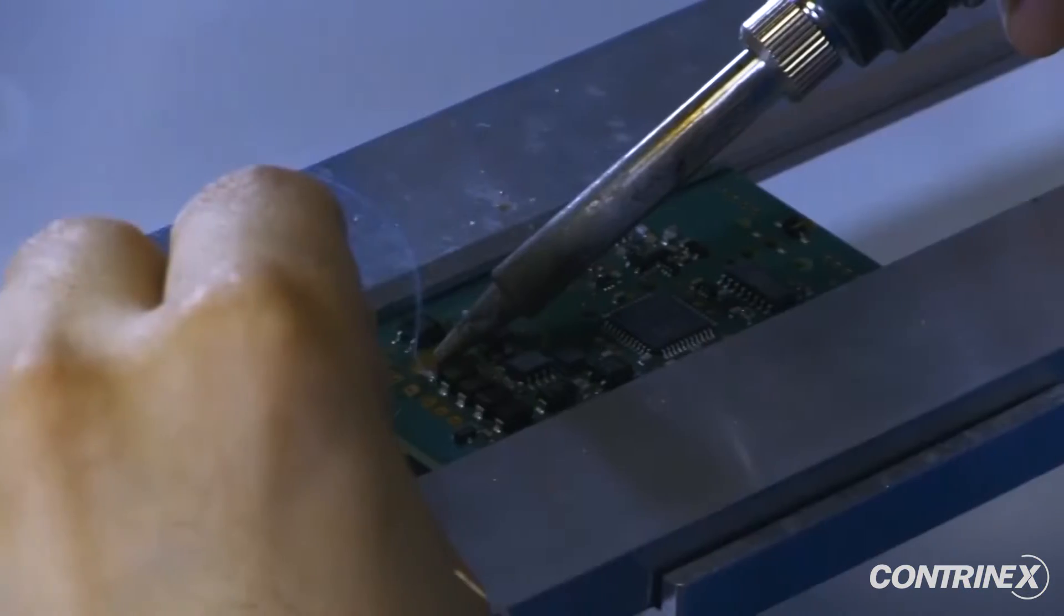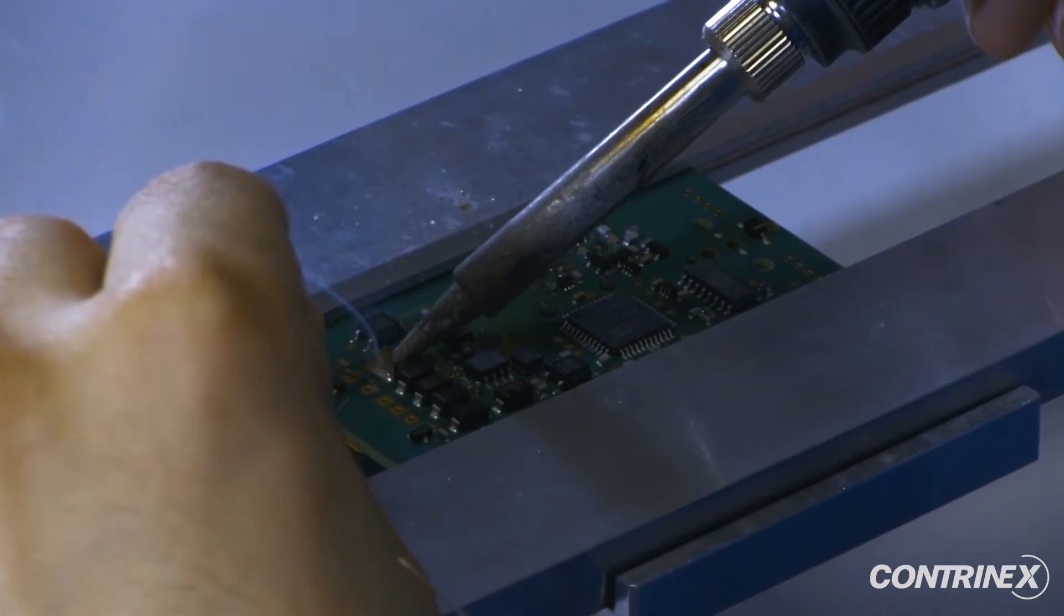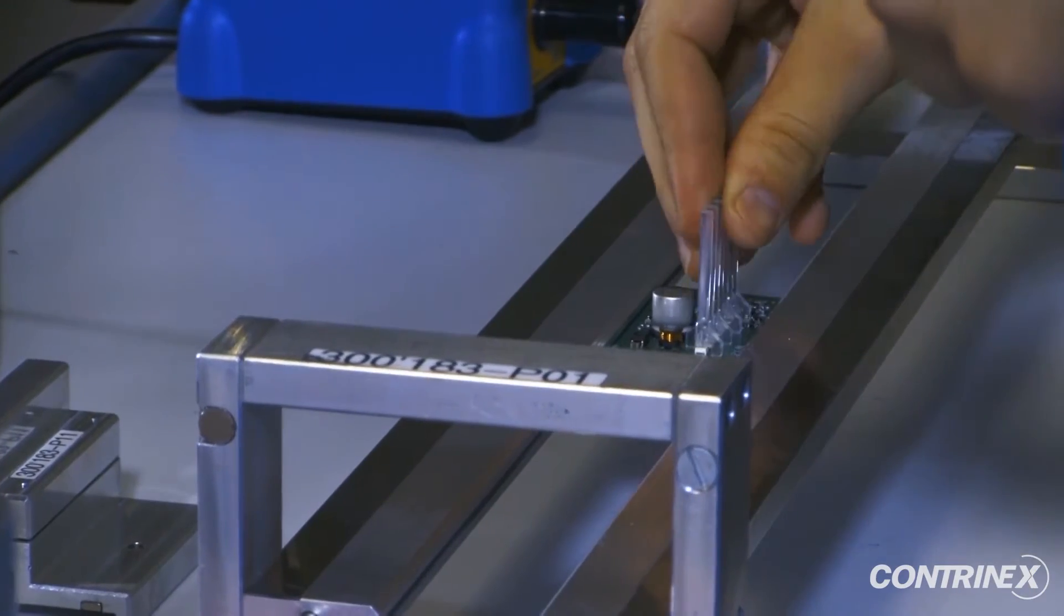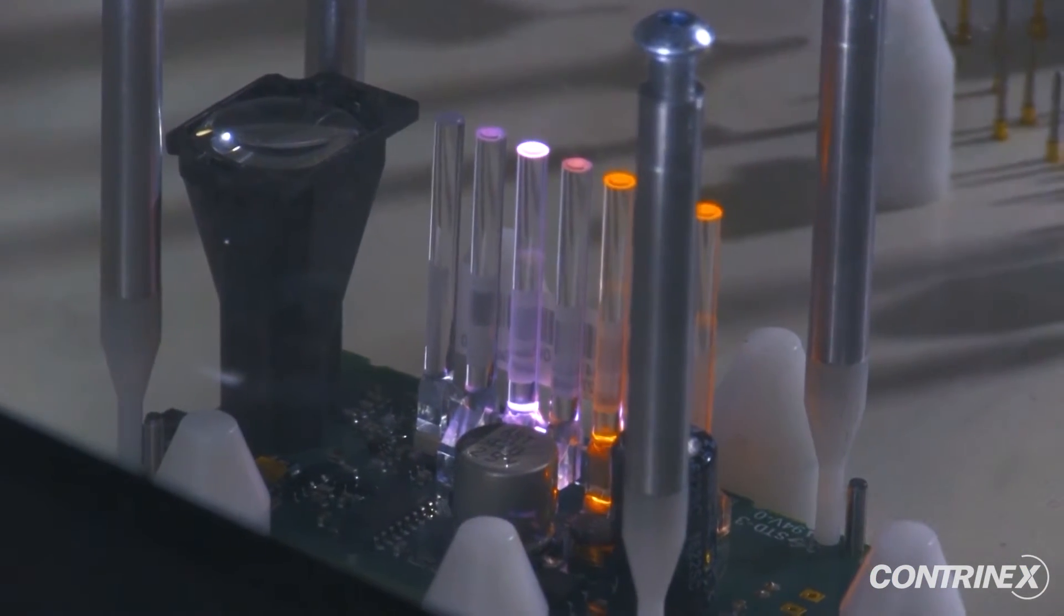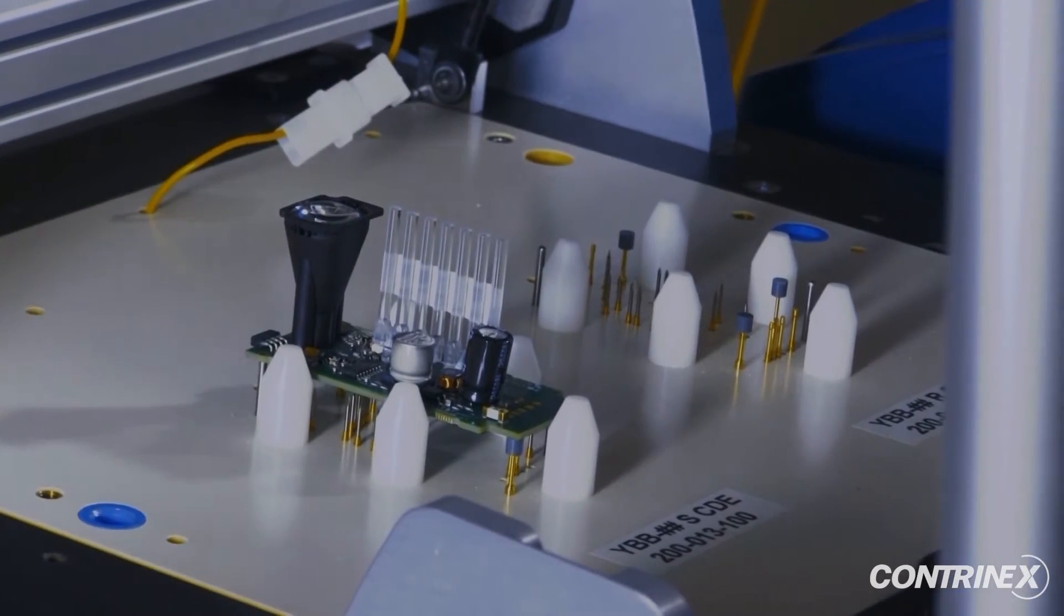Each Safetinex product is hand assembled, starting at the component level. Circuit boards are quality controlled through a series of rigorous tests.